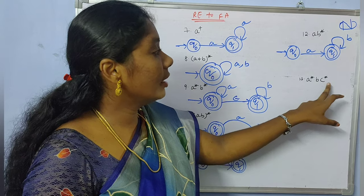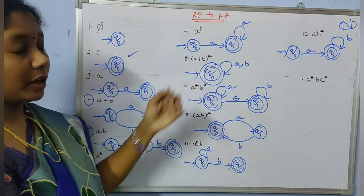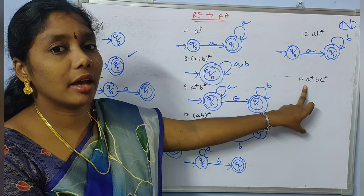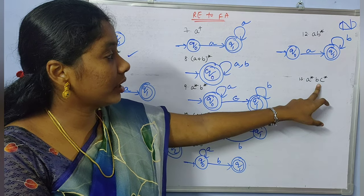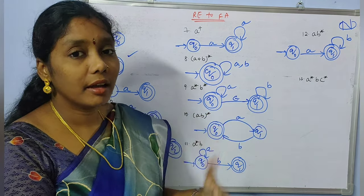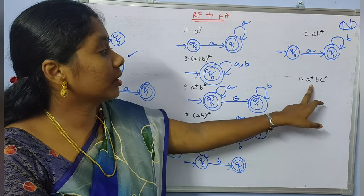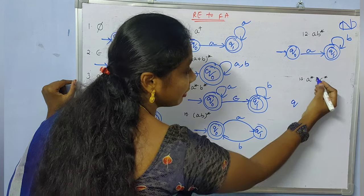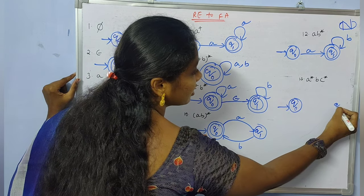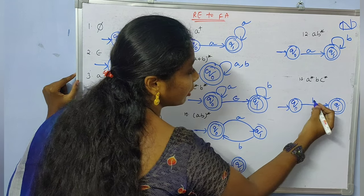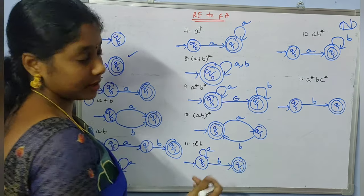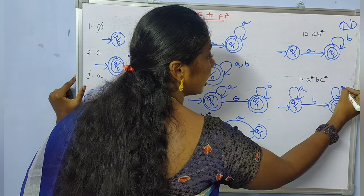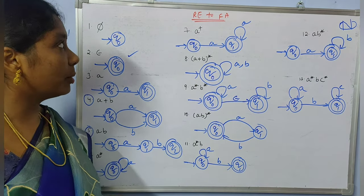Coming to the thirteenth one, 'a*bc*'. By combining observations from examples 11 and 12 we can get this automata. Initially we have any number of 'a's, then exactly one 'b', and after that any number of 'c's. The minimum string is 'b'. So we have a self-loop on 'a' at q0, then a transition with 'b' to the final state, and from there a self-loop on 'c'. This is how we generate finite automata from regular expressions.